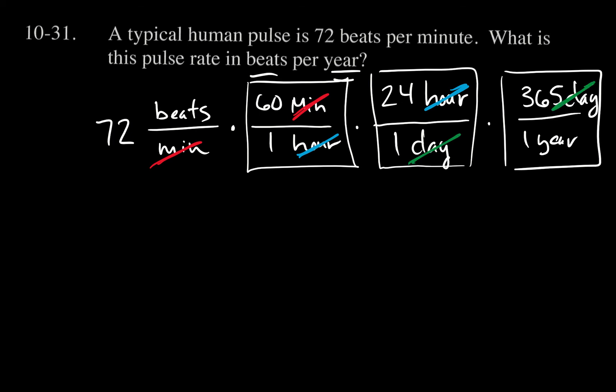So if you look at my units, the only thing I'm left with is beats in the numerator and year in the denominator. So this is beats per year. Now the question is, what's the number?